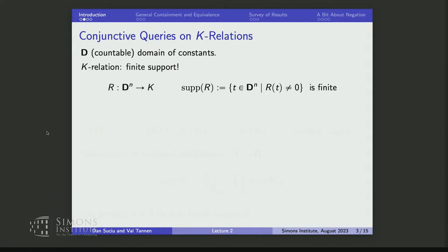Consider a countable domain of constants. A K-relation is a function from D^n to K with finite support — all tuples whose annotation is non-zero — because there are infinitely many tuples over a countable domain. For conjunctive queries with bag semantics, you should consider bodies where the same atom can appear more than once, so the body is a bag of atoms, not just a set.